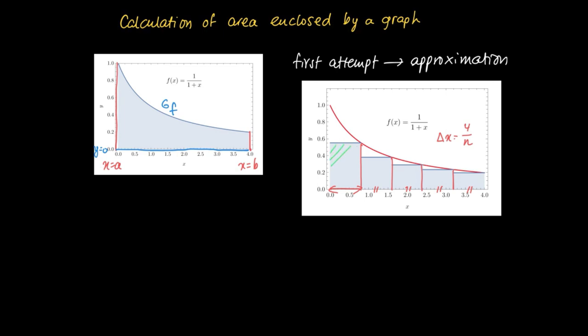The length of each of these intervals is delta x equals 4 divided by n if we have n equal-length intervals. Then we take the green part as an estimate of the actual area enclosed by the graph.